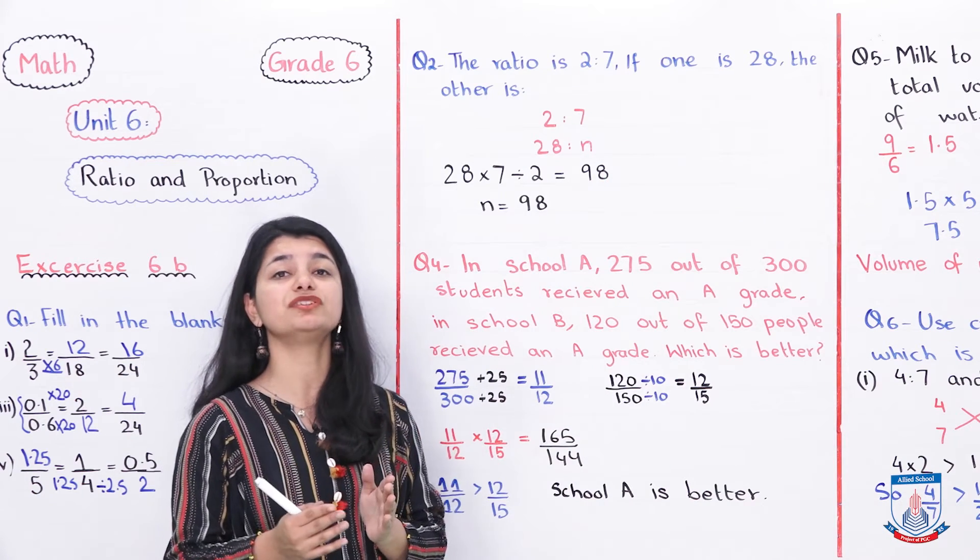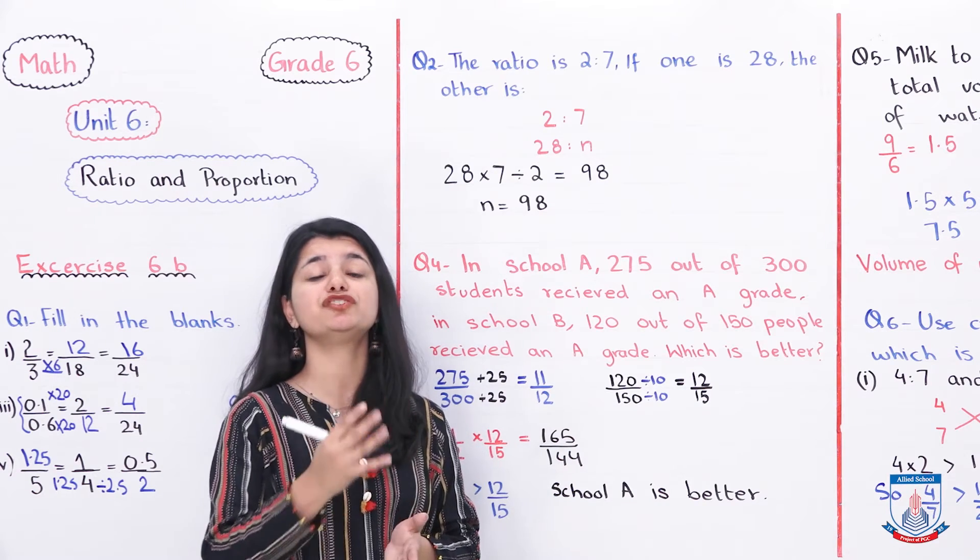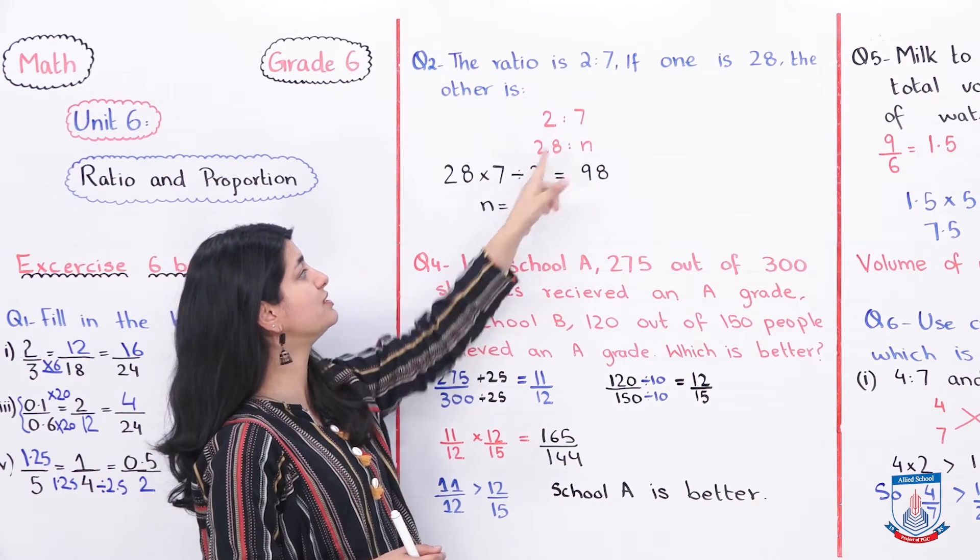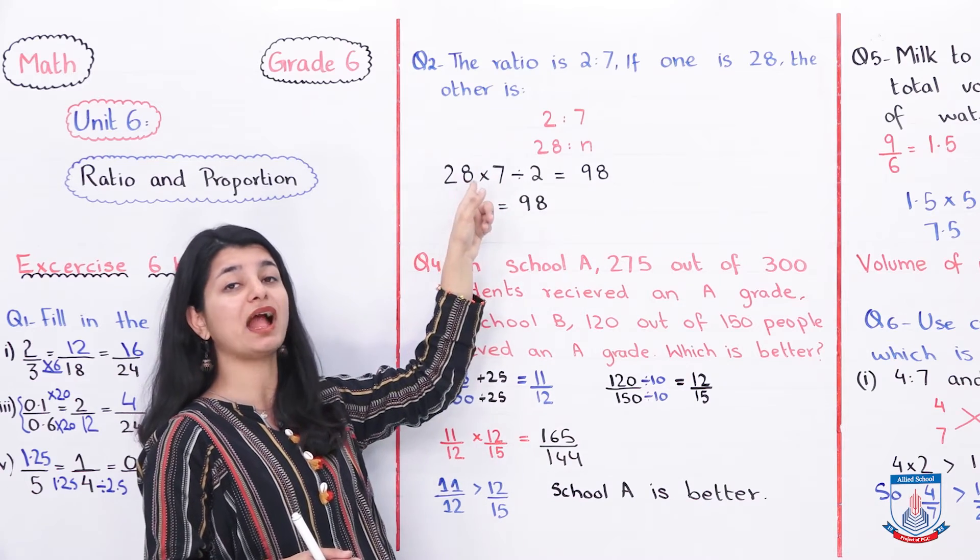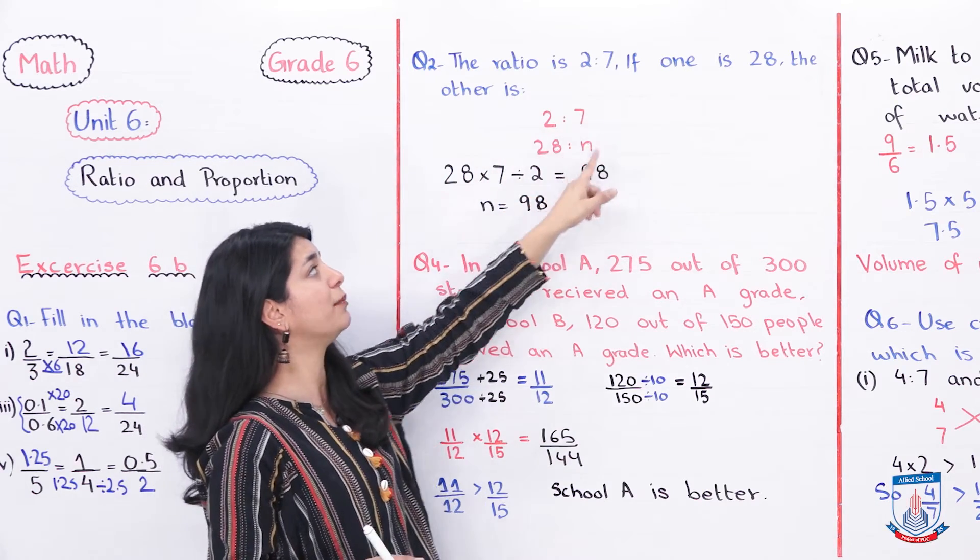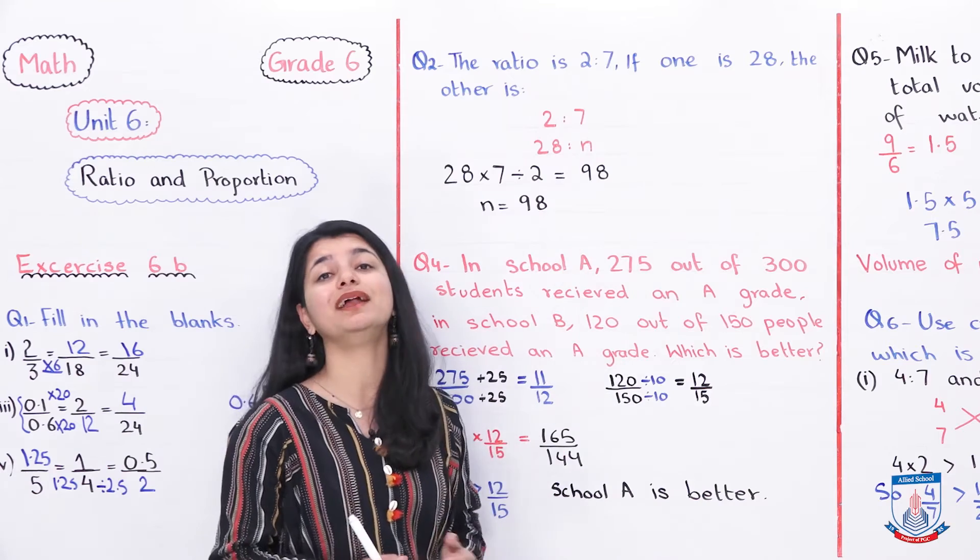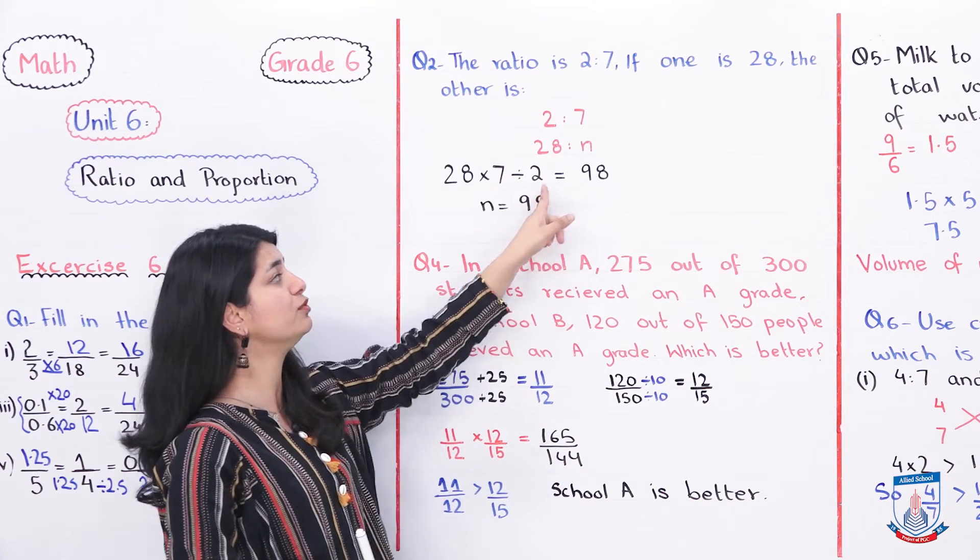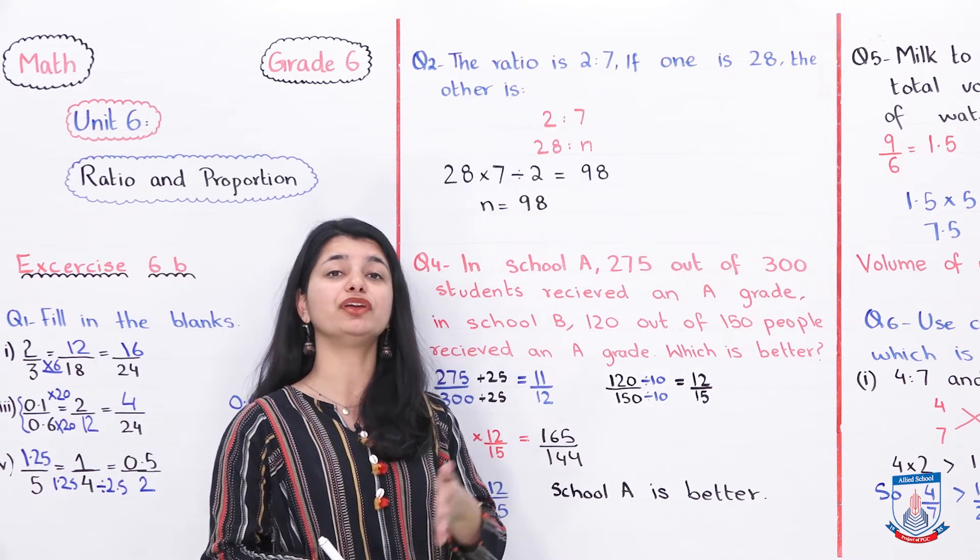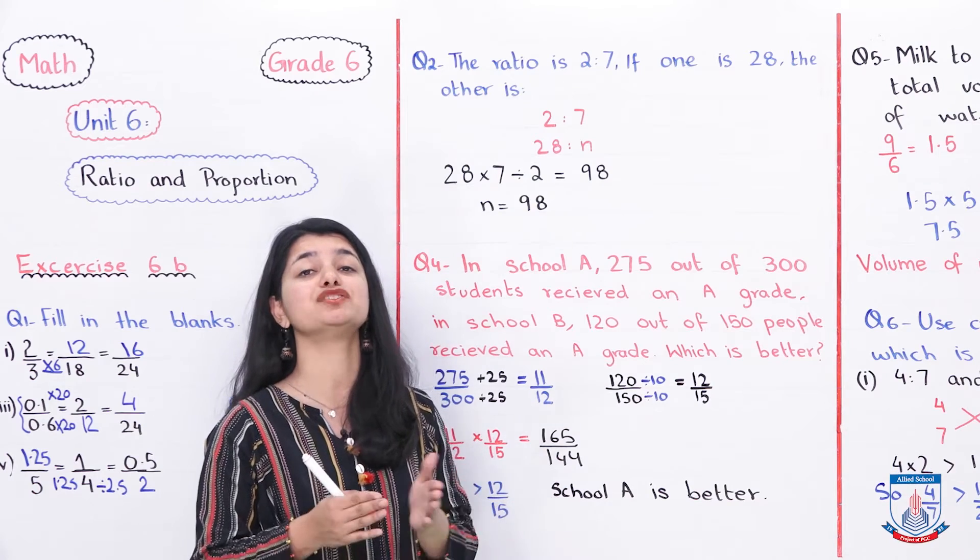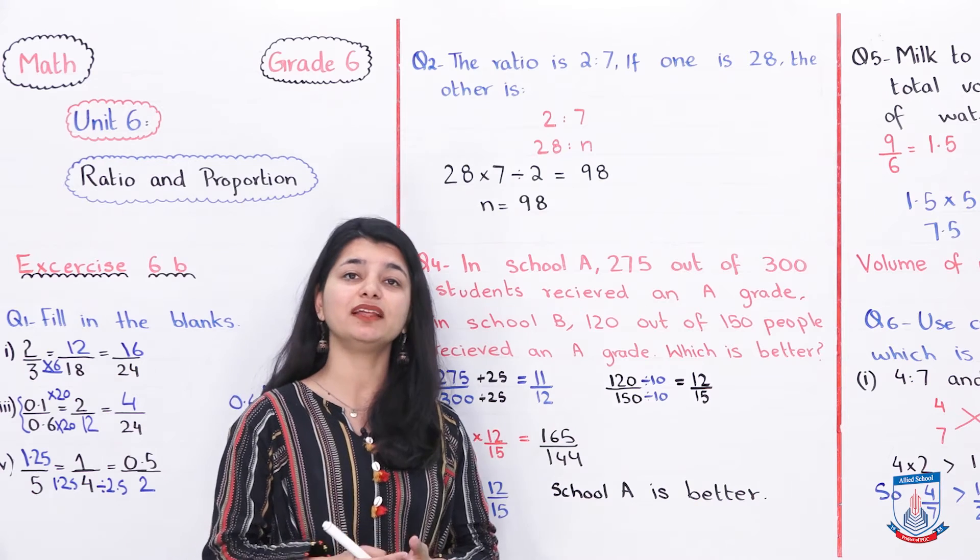If you look at it, we multiplied 28 by 7 and that should be equal to 2 into N, right? Because we studied that in equivalent fractions, in equivalent ratios, both sides, after cross multiplication, become the same. So they should be equal. In this way, we did 28 into 7 and then because that was equal to 2N, we put the 2 over here and divided it. When we divide 28 into 7 by 2, we get the value of N. So what is 28 into 7? That is 196. Then when you divide it by 2, you get 98 and that would be your answer. You can say that since the first quantity is 28, the second one in relation to that is 98.